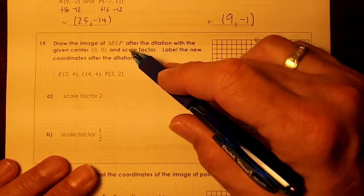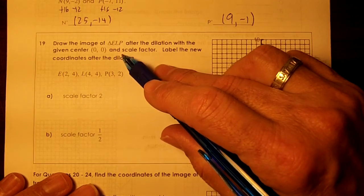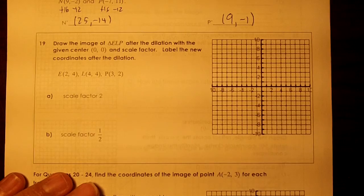Okay, this is pretty simple here. Draw the image of ELP after the dilation with the given center 0,0 and scale factor. Label the new coordinates after the dilation.